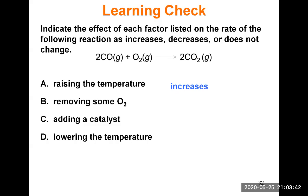Removing some oxygen from the reaction flask decreases the chance of collisions between oxygen and carbon monoxide, so fewer molecules become product and the reaction rate decreases. Adding a catalyst increases the reaction rate by lowering the activation energy and helping the reaction happen faster. Lowering the temperature removes kinetic energy from the molecules, decreasing their speed and energy, which decreases the rate of reaction.